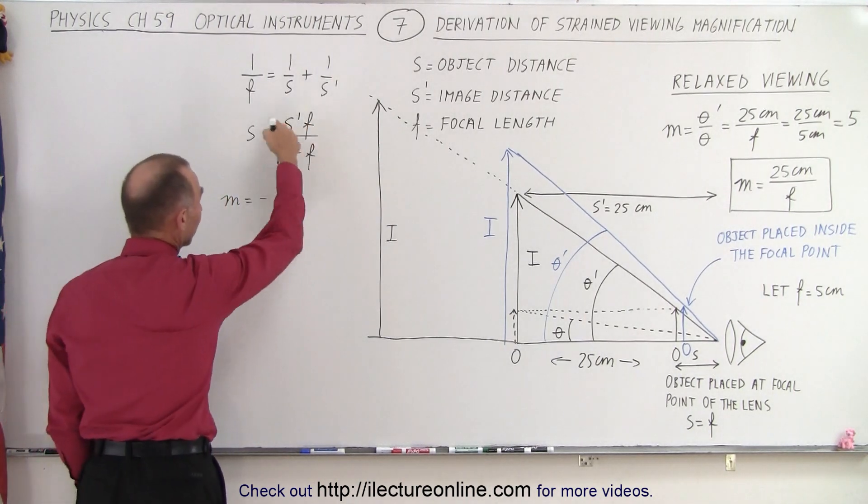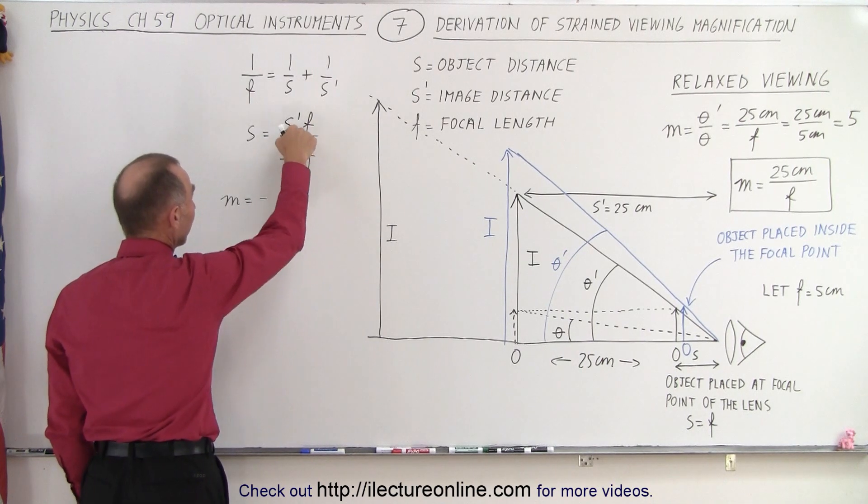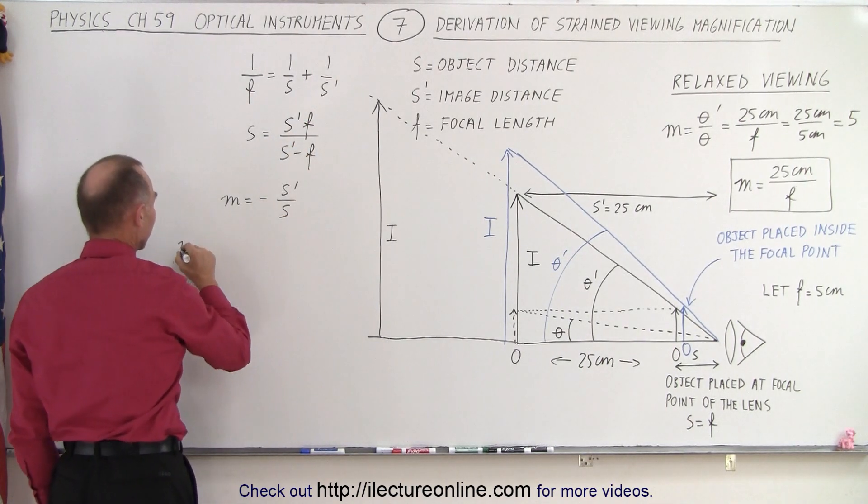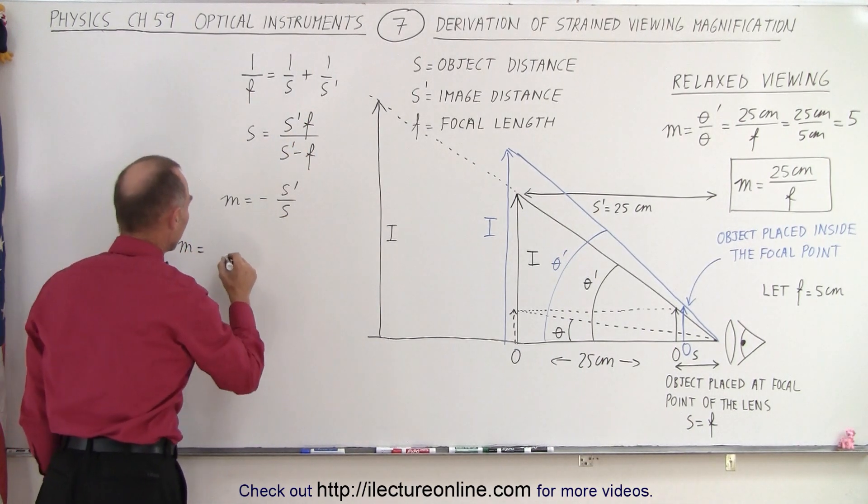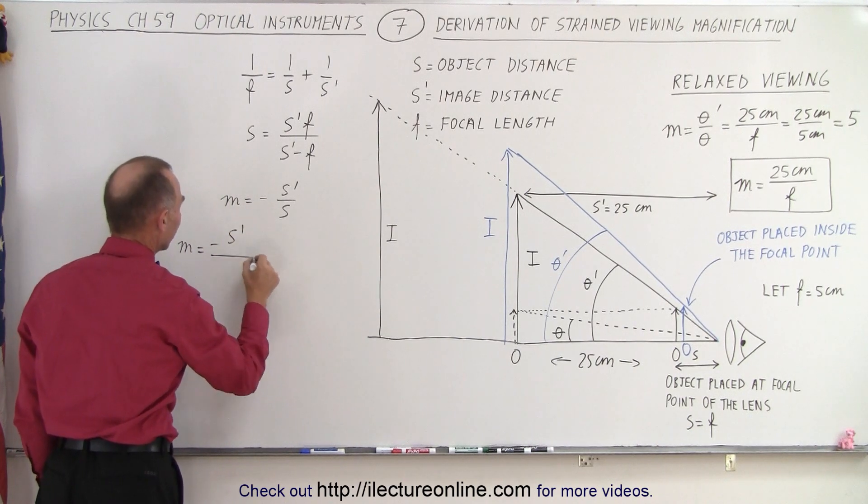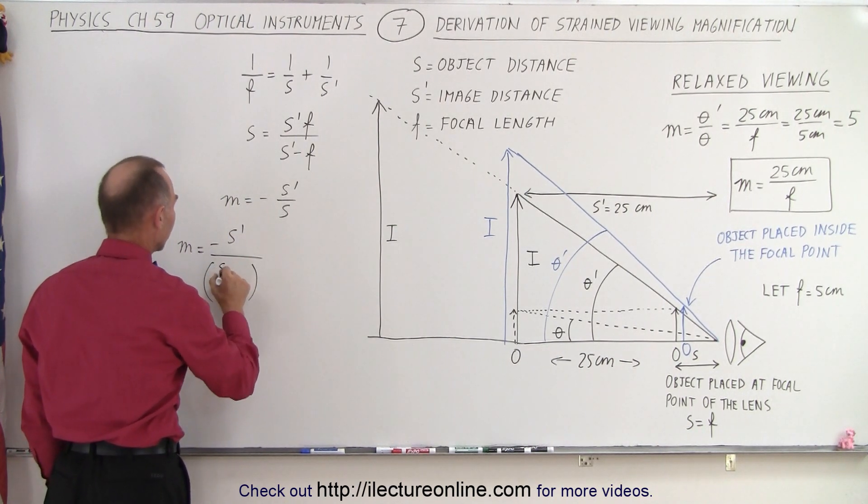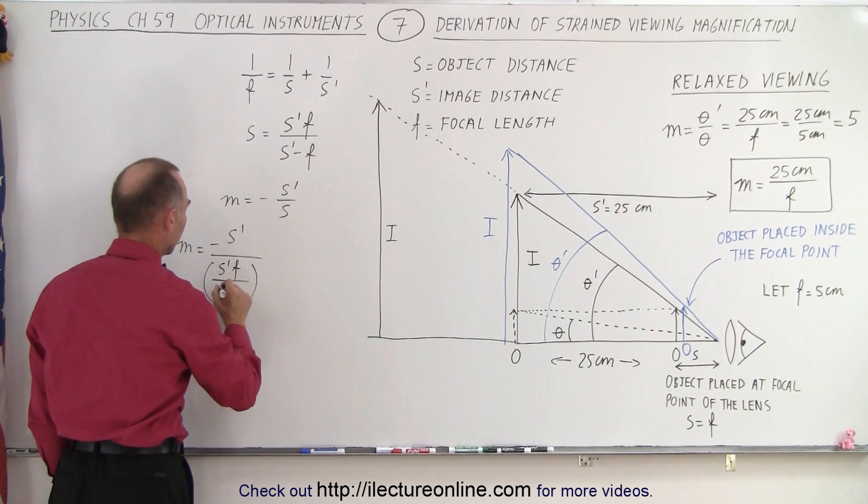So instead of S, we're going to write what S is equal to in terms of S prime and F. So the magnification is going to be equal to minus S prime divided by this quantity right here, which is S prime F over S prime minus F.